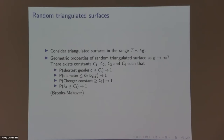Brooks and Makover studied the question I described: you sample a random triangulated surface, look at the hyperbolic metric, and ask what it looks like. They studied this basically in the range where t is proportional to 4g. One thing to note is that if you glue some fixed number of triangles together and condition on getting a connected compact surface, the expected genus is around t over 4. In this situation you can imagine the surface has very few vertices in the triangulation — say around log g vertices — with very high degree.